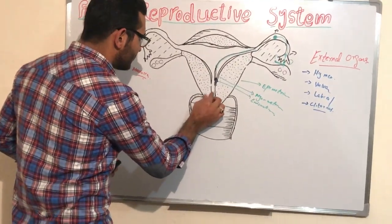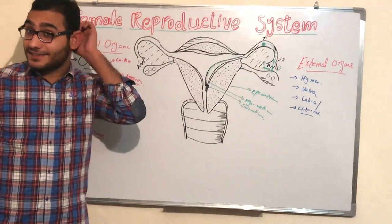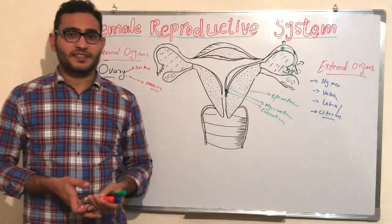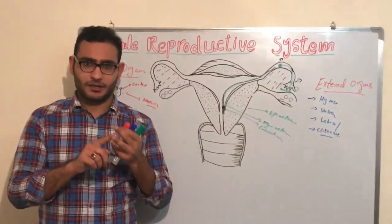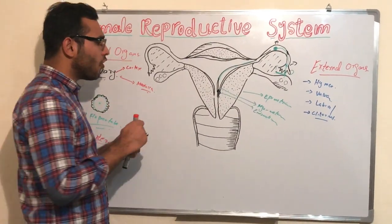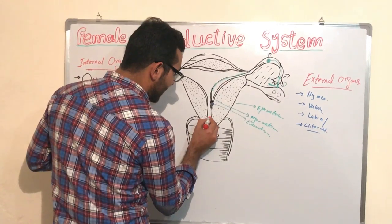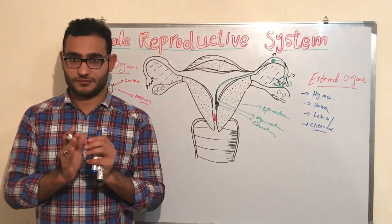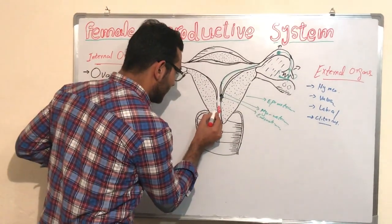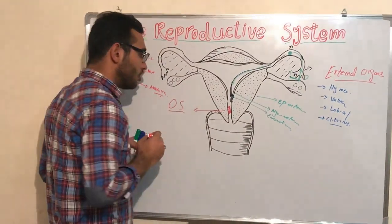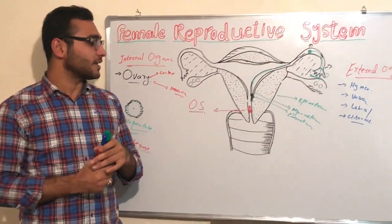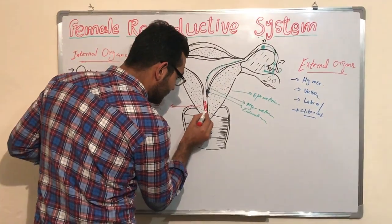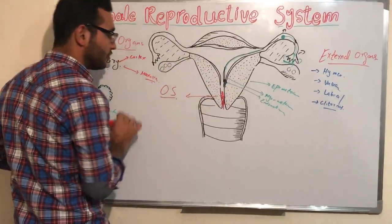Now we come to the cervix. The opening of the cervix is known as an os. The cervix has two openings: if the opening is towards the uterus, it is known as the internal os; if the opening is towards the vagina, it is known as the external os.